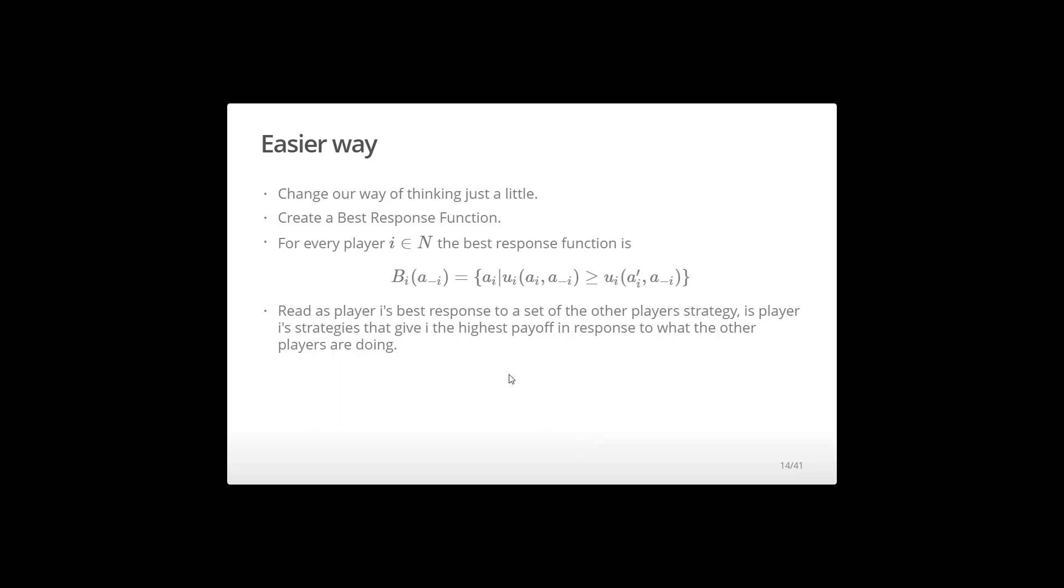So let's construct a best response function. Now, this time, for every player i, so that means I've got to do this for everybody, my best response function says, best response function for player i is a function of - the minus sign in front of the i means everybody else but i. So what I'm going to be looking at is I'm going to be looking at strategy combinations of every other player, the one that's not player i. And what I'm going to do is I'm going to construct a set. I'm going to look at every strategy player i could choose that gives them a highest payoff. That's what this inequality is saying, given what the other player is doing.